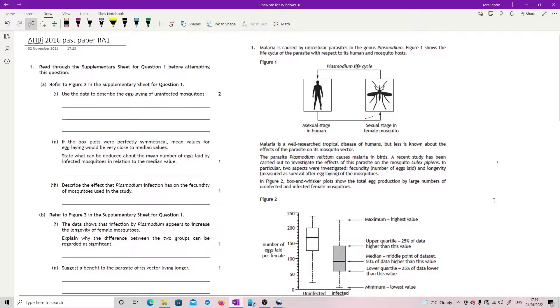Okay, 2016 paper. We are looking at the first restricted answer which is the data handling one. You will get a supplementary sheet for this one, normally two sides in a single A3 sheet which you can open up to use while you're also doing the question.